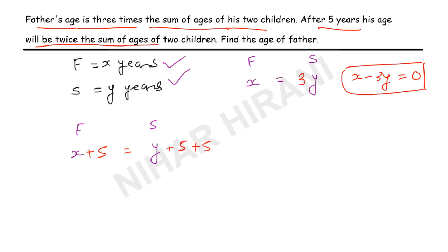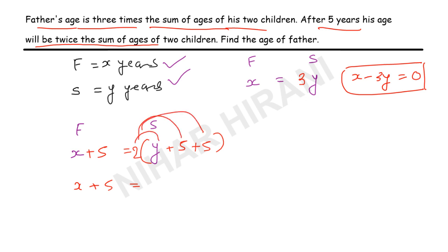To illustrate: if the sum of children's ages is five, father is ten — father is two times. So we write: x + 5 = 2(y + 5 + 5), which gives x + 5 = 2y + 10 + 10. Simplifying: x - 2y = 20 - 5, so x - 2y = 15. That is equation two.